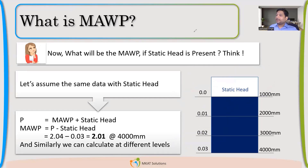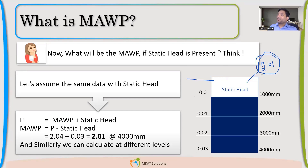At the top, pressure should be 2.01 MPa and at the bottom, if we are applying 2.01 at the top, the pressure at the bottom is 2.04. There is a difference between pressure and pressure-taking capability. The top has more pressure-taking capability because it does not have any static head, but what I can apply is only 2.01 — because if I apply 2.02, the bottom will experience 2.05, which exceeds what that part can take.